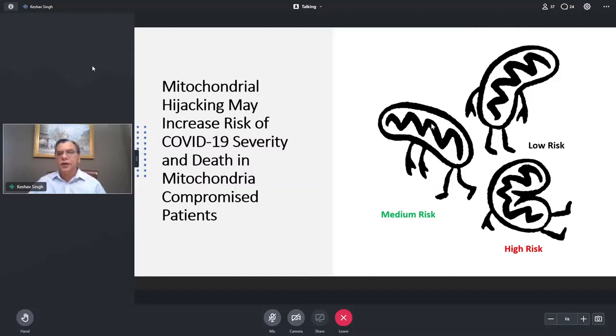Those who have the little tired mitochondria, as you can see here, seems to have a medium risk. And those who have a high risk, and I will talk to you about those high risk, people who have compromised mitochondria, seems to be much more severe and leading to mortality.